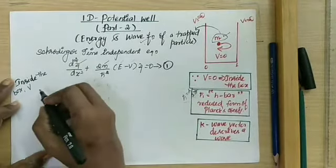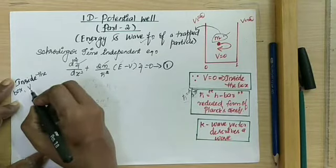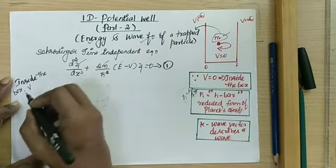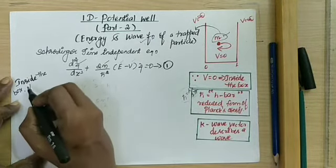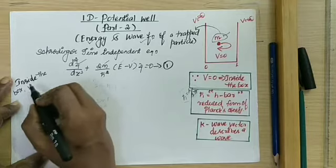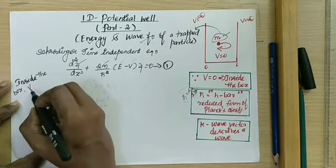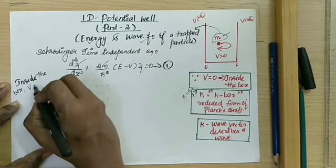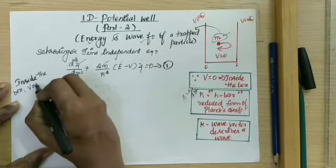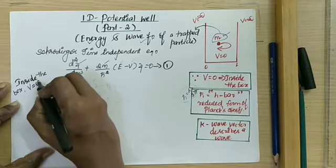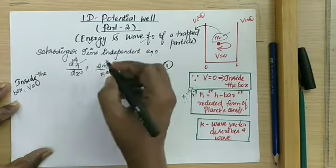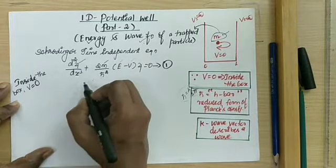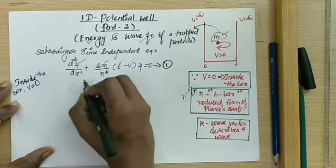We begin by imposing the boundary condition for the inside of the box. The particle can never be in a still position, so we take the potential energy V equal to 0. Since the particle will keep on moving, kinetic energy will be maximum. So here we fix V equal to 0.